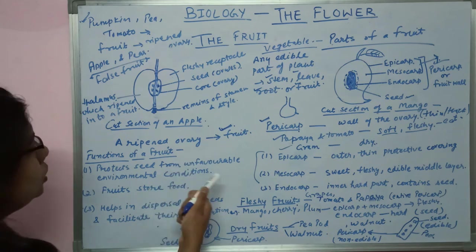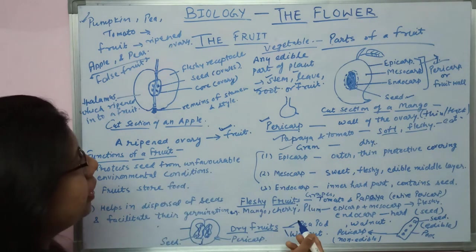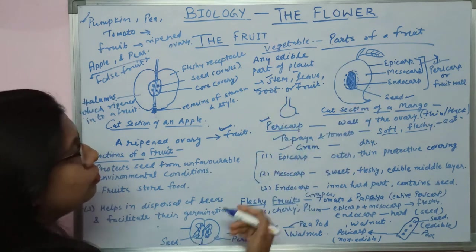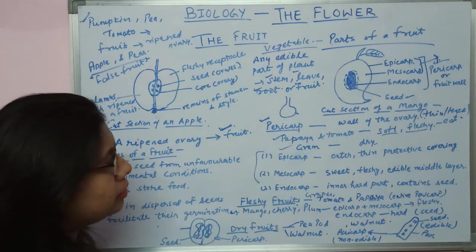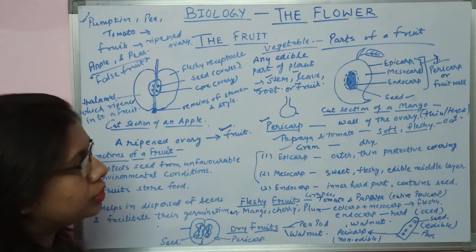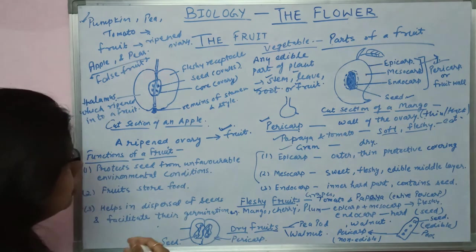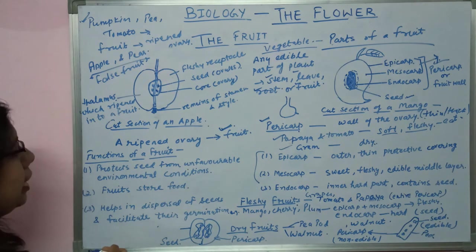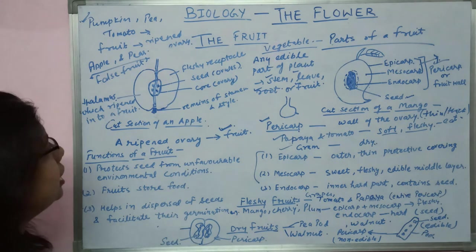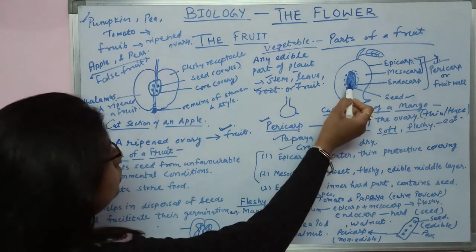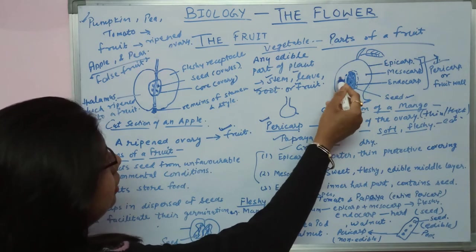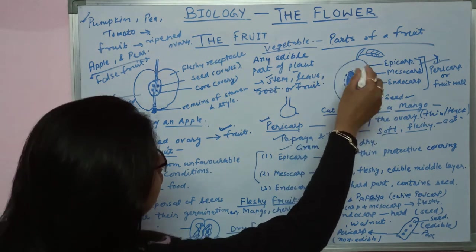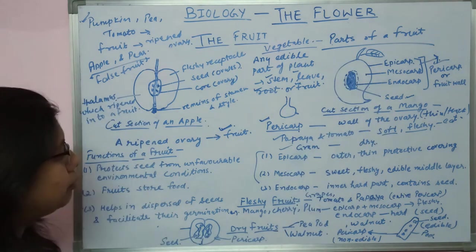The third function: fruits help in the dispersal of seeds. As human beings and animals feed on the fruit, they take the fruit from one place to another, which facilitates germination. The seed can also germinate in unfavorable conditions with the help of this fleshy coated fruit.